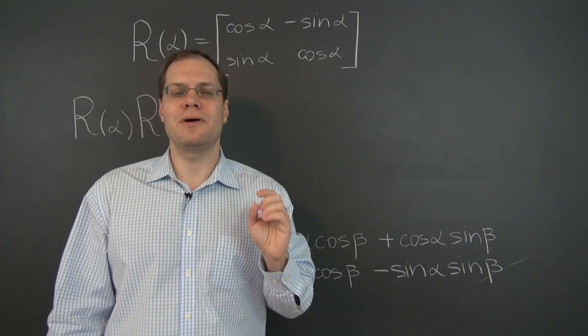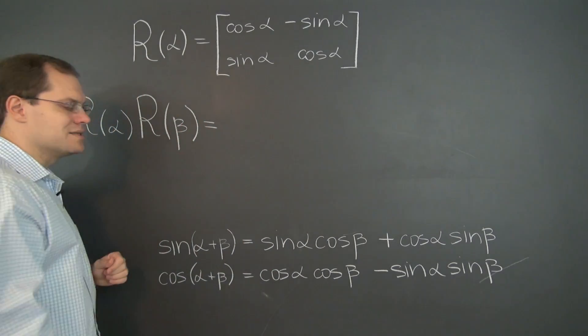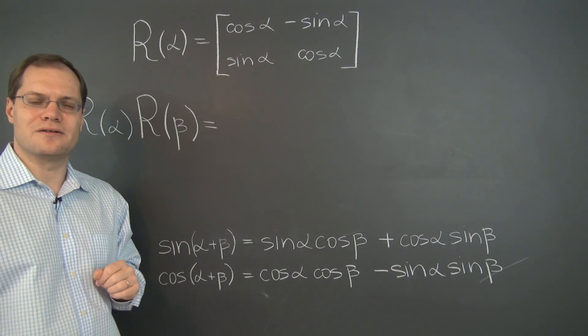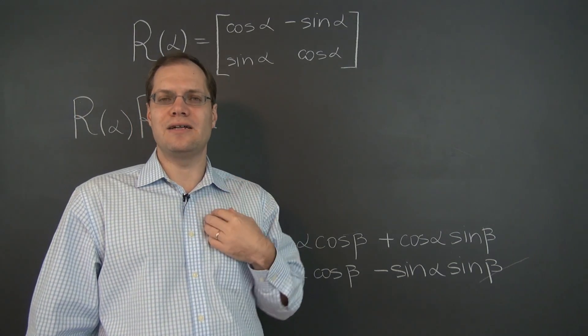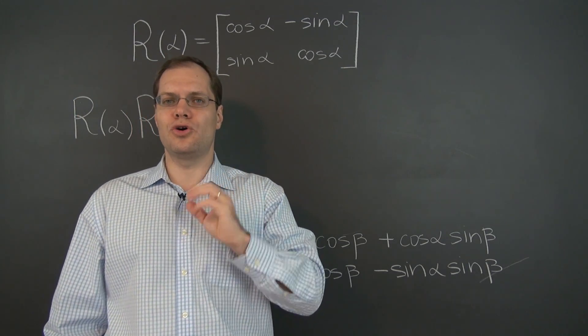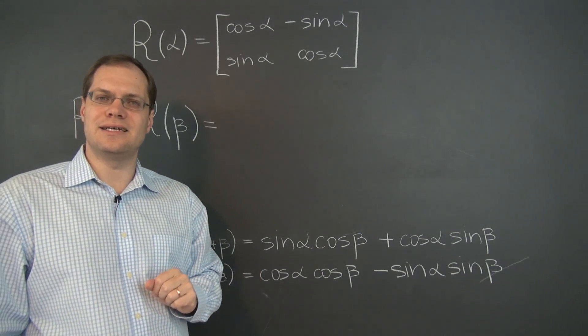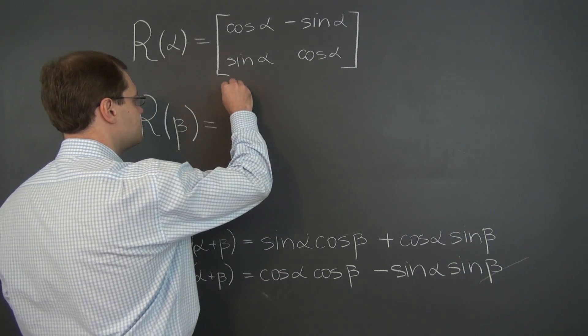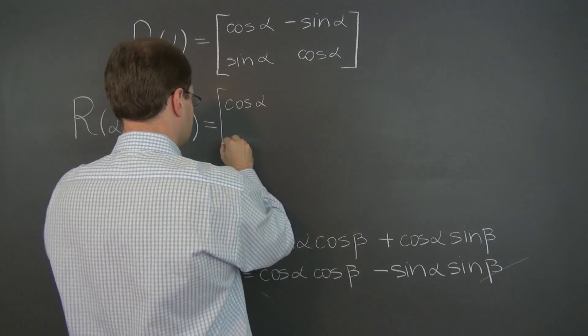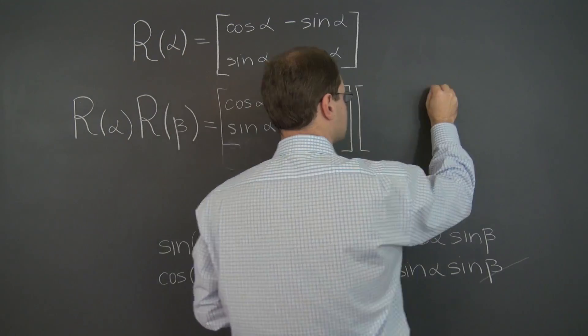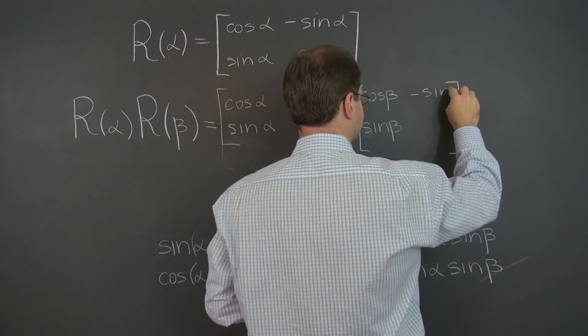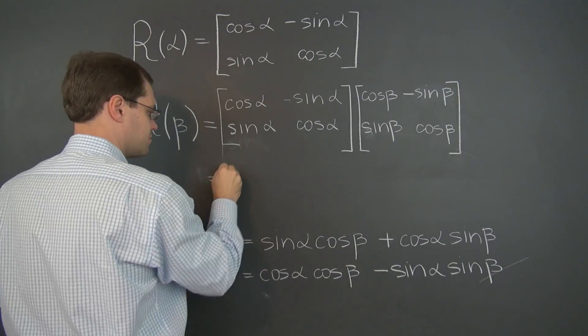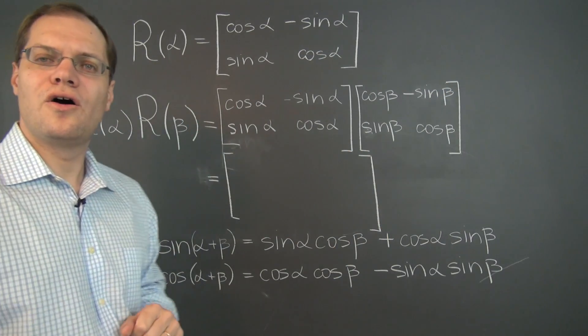But nothing compared to what will happen when we multiply these two matrices together. So let's go ahead and do that. I'll do it on my own. You do it on your own. And remember to use these identities. Here we go.